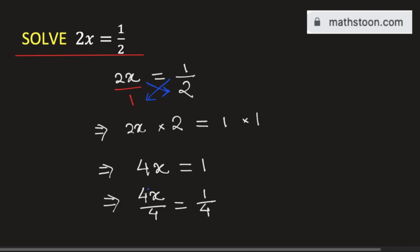The 4s cancel, so we have x = 1/4. This is the solution of the given linear equation and our final answer.